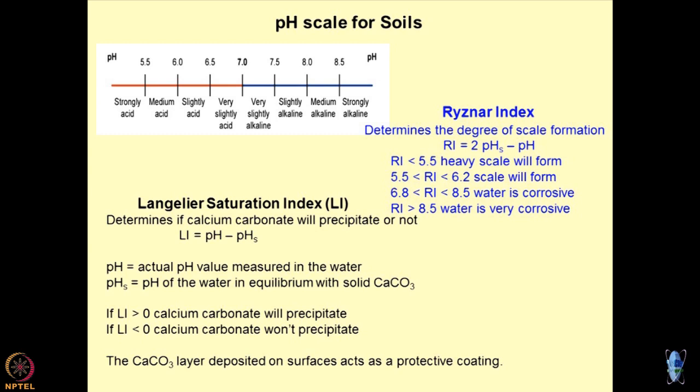Calcium will ooze out from structures, go into the outside environment and precipitate there, which is why you see the color of piles becoming white. However, if LI is negative, that means PHS is more than pH, and calcium carbonate will not precipitate.